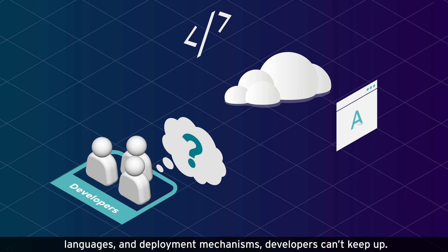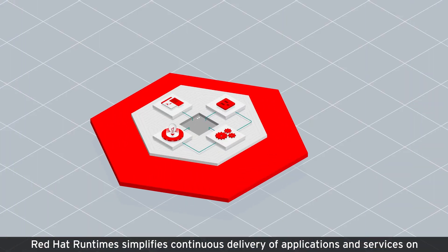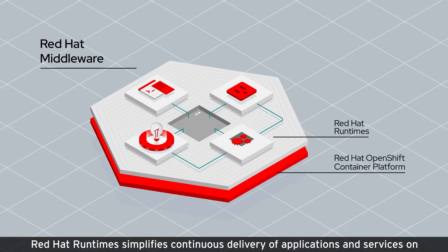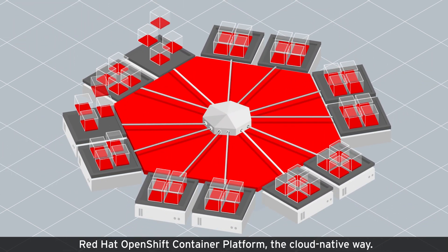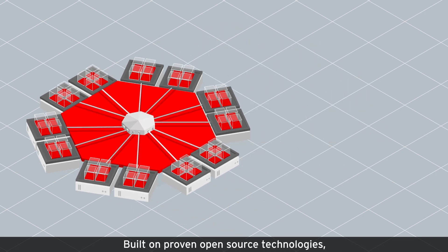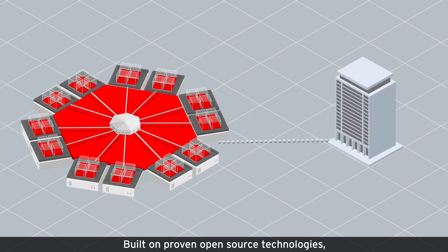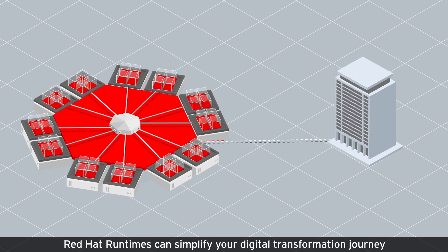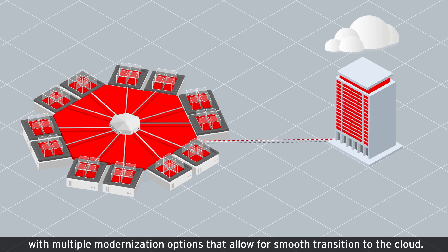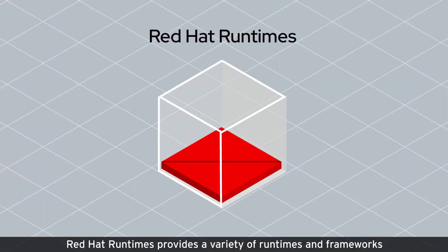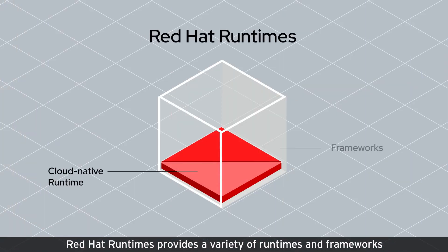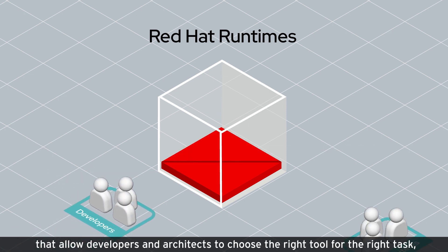Red Hat Runtimes simplifies continuous delivery of applications and services on Red Hat OpenShift Container Platform, the cloud native way. Built on proven open source technologies, Red Hat Runtimes can simplify your digital transformation journey with multiple modernization options that allow for smooth transition to the cloud. Red Hat Runtimes provides a variety of runtimes and frameworks that allow developers and architects to choose the right tool for the right task.